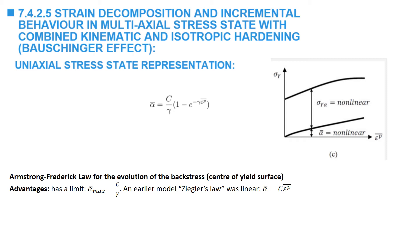Armstrong-Frederick proposed an exponential law in which alpha bar is equal to a constant c over gamma, multiplied by 1 minus e to the power of negative gamma multiplied by the equivalent plastic strain. This model is based on many experimental observations. One advantage of this model over previous models is that it predicts a maximum alpha equal to c over gamma. Once the equivalent plastic strain goes to infinity, the exponential term goes to zero and alpha approaches c over gamma.